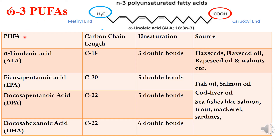The PUFA examples include alpha-linolenic acid, abbreviated as ALA. The carbon chain length is 18, and there are three double bonds in it. The food sources include flaxseeds, flaxseed oil, rapeseed oil, walnut, and walnut oil.